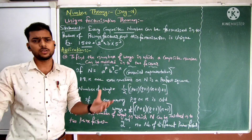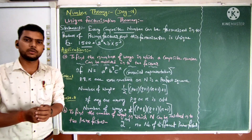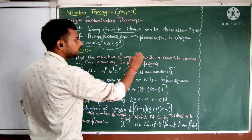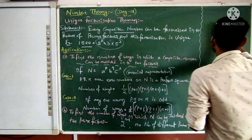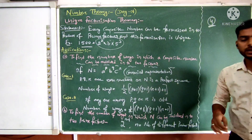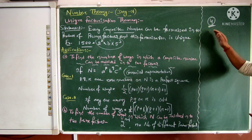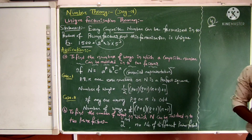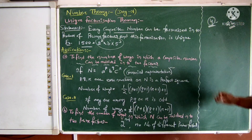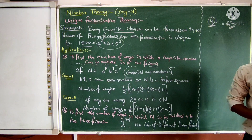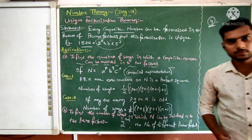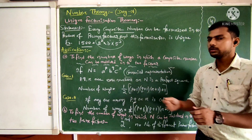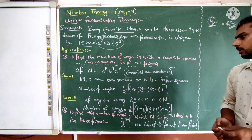Now let us look at some applications of factorization. The first application is to find the number of ways in which a composite number can be resolved into two factors. Taking a small number 4: it can be written as 1×4, which is one pair of factors, and 2×2, which is another pair. So in this way we can find the answer easily. But for greater numbers like 1500, we need a formula.